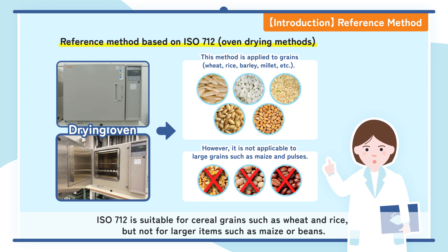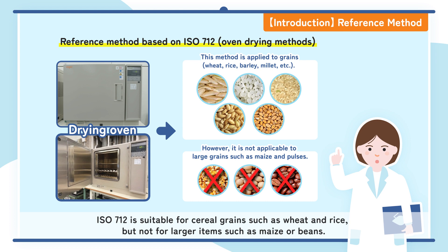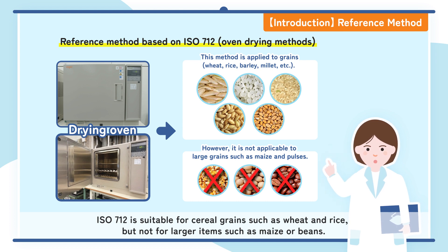ISO 712 is suitable for cereal grains such as wheat and rice, but not for larger items such as maize or beans.